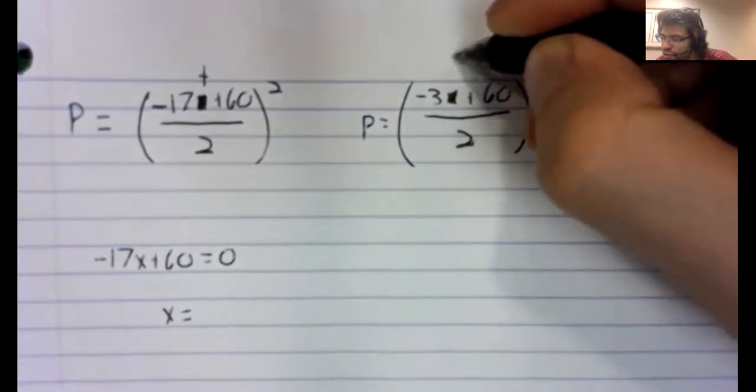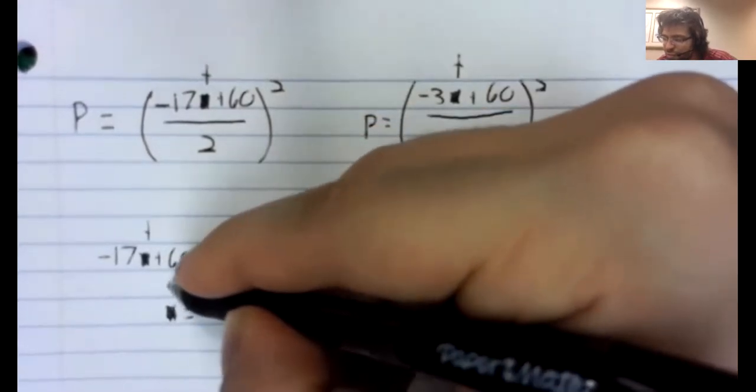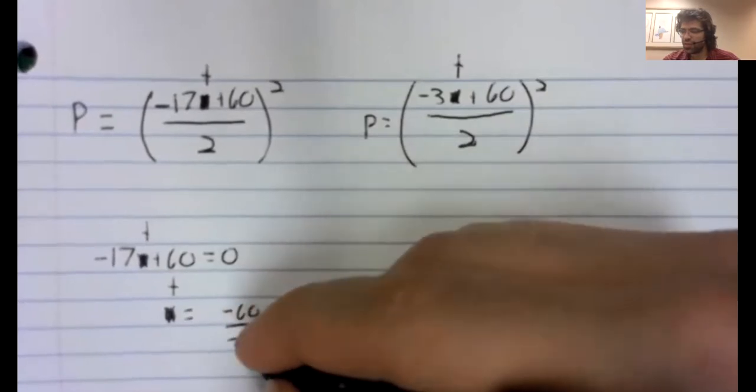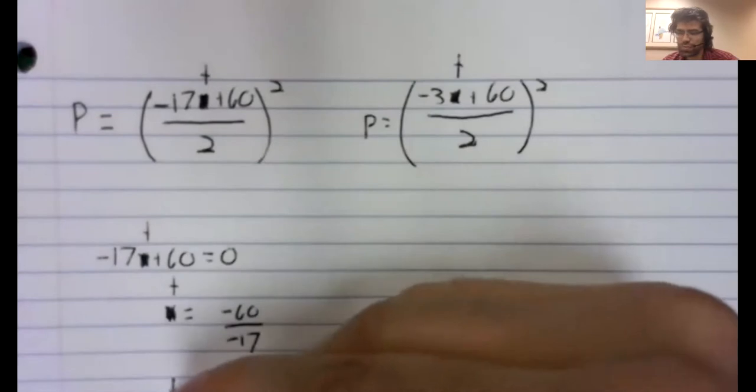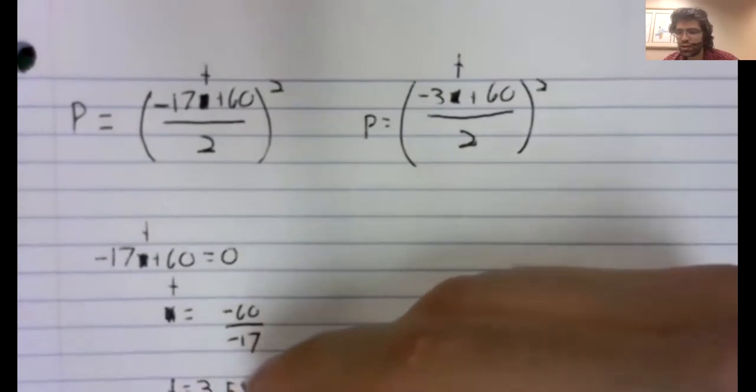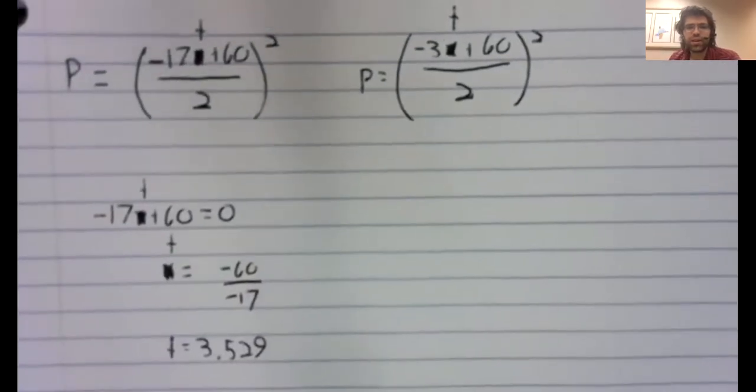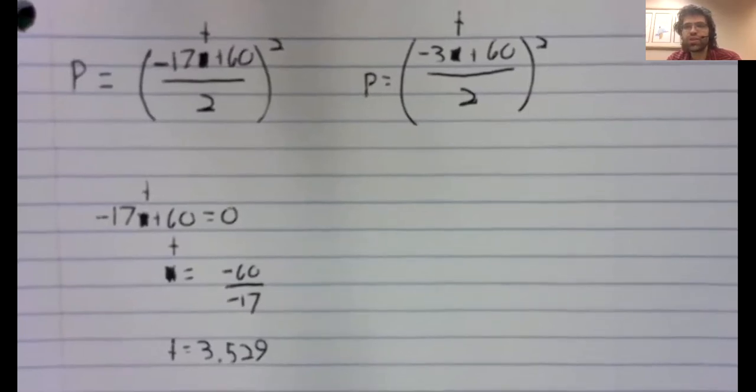Sorry, we shouldn't change our variable name mid video. We get t equals negative 60 divided by negative 17, which is about 3.529 weeks. And that can't be right. Because we're given information about the population after six weeks. We're told that after six weeks, the population is 441 fish.